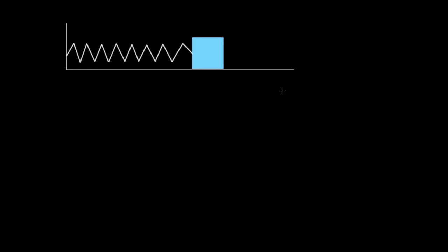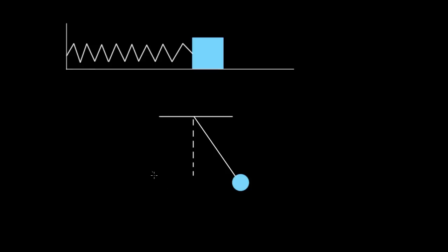We should talk about oscillators. An oscillator is an object or variable that can move back and forth, increase and decrease, go up and down, left and right, over and over. For instance, a mass on a spring is an oscillator — if we pull this mass back, it's gonna oscillate back and forth. Another common example is a pendulum: a mass connected to a string that you pull back and it swings back and forth. That's an oscillator.